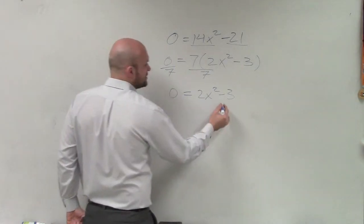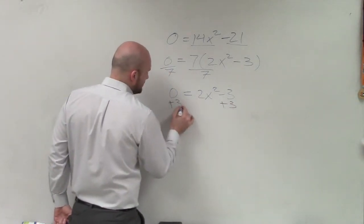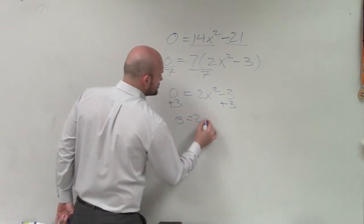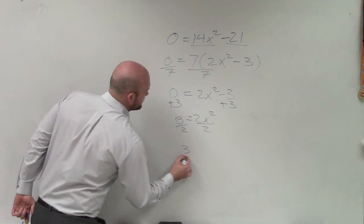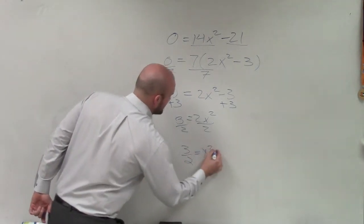So anyways, now to solve, I can use my inverse operation. So I add 3 to both sides, so 3 = 2x². Now I'll divide by 2 on both sides, so I have 3/2 = x². And I love this one, because I want them to go through a little bit of algebra.